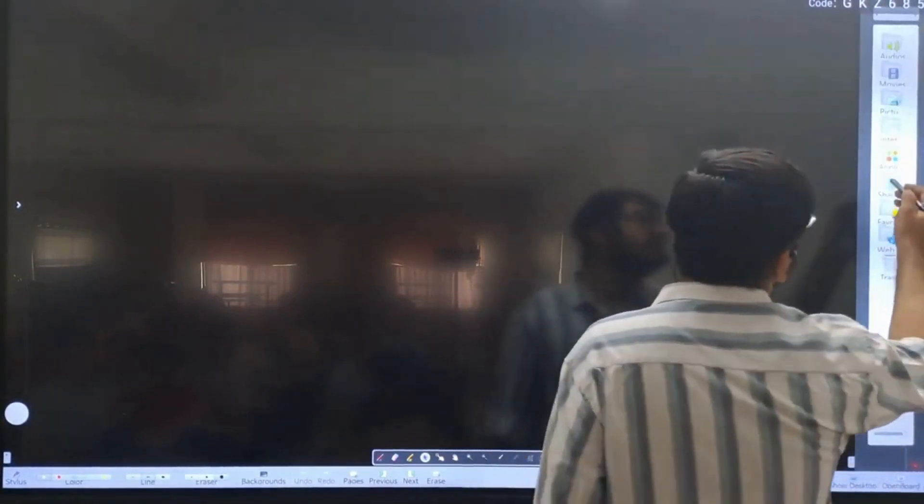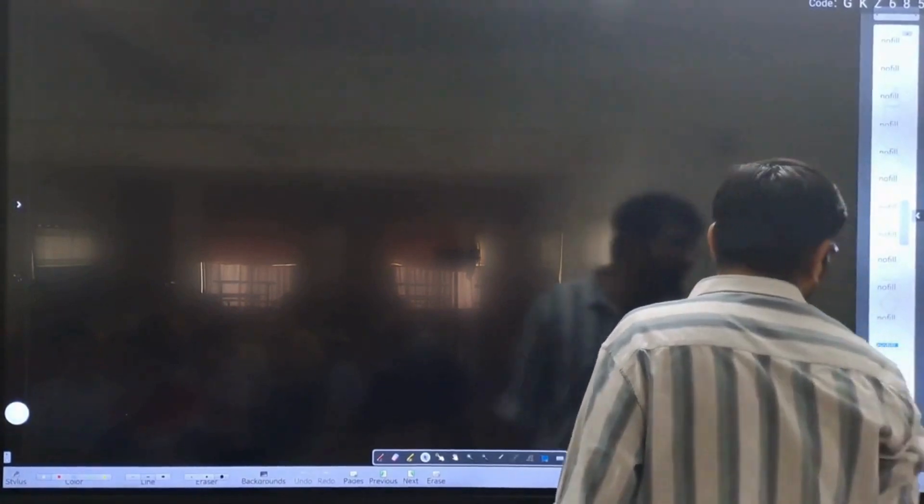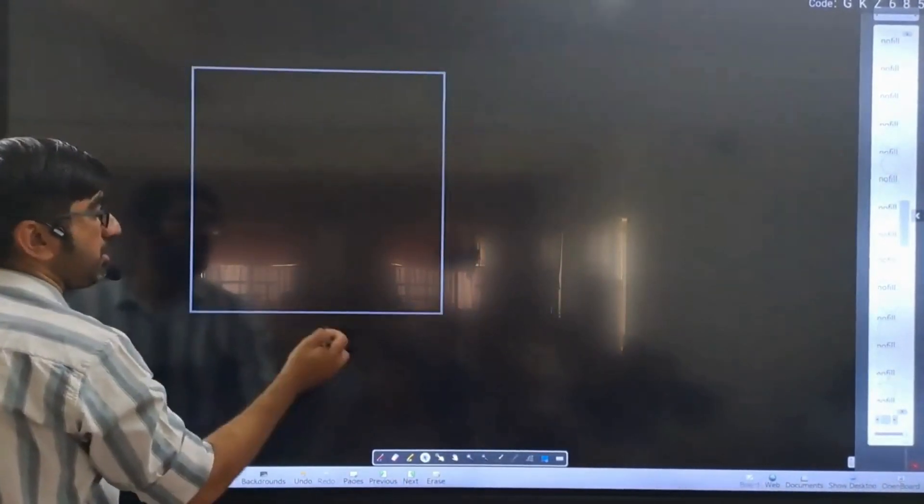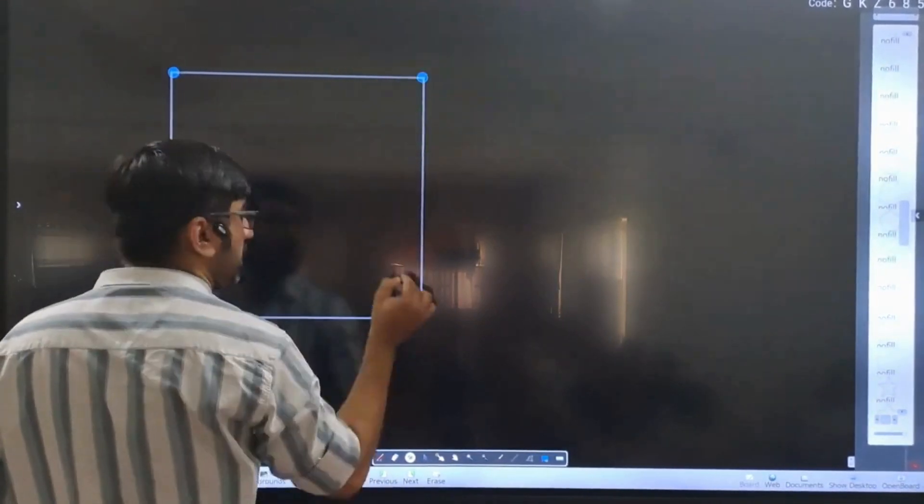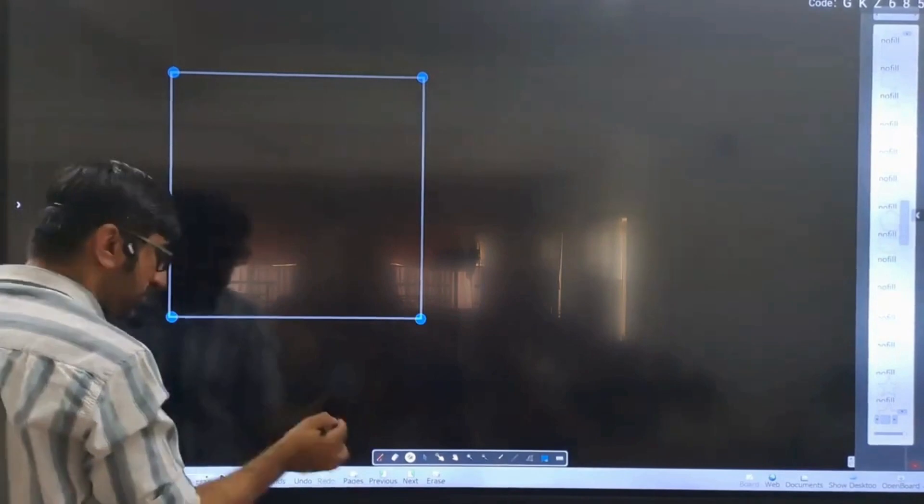We have four charges +q, +q, -q, -q placed at the corners of a square in order. Basically, this is +q, this is +q, this is -q, this is -q.